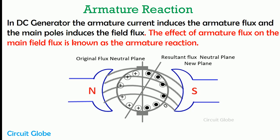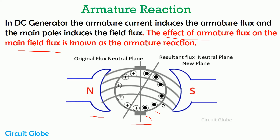First of all, understand what is armature reaction. The DC generator has three main parts: the first one is the magnetic field system, the second one is the armature conductor, and the third one is the brushes and commutator. The magnetic field system induces the magnetic flux in the DC generator, and when current flows through the armature conductor, the armature conductor induces the armature flux. When these two fluxes interact with each other, the effect of armature flux on the main field flux is known as armature reaction.